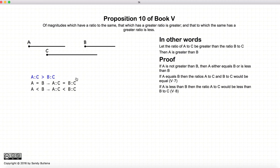So to prove it, well, if A is not greater than B, then A is either equal to B or A would be less than B. So we're going to show this proof by contradiction.